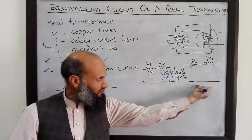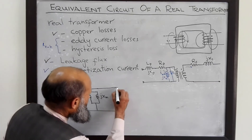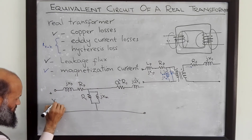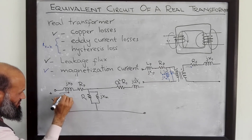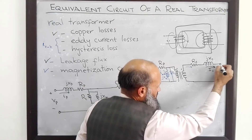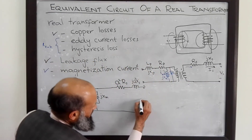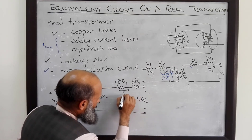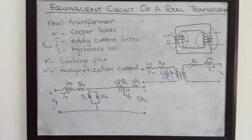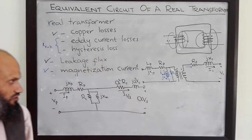To refer all quantities to the primary side, we eliminate the ideal transformer symbol and multiply all secondary impedances by a². The primary voltage is Vp and primary current is Ip. The secondary current Is and secondary voltage Vs, when referred to the primary side, become a·Vs and Is/a respectively. We represent all quantities using phasors.